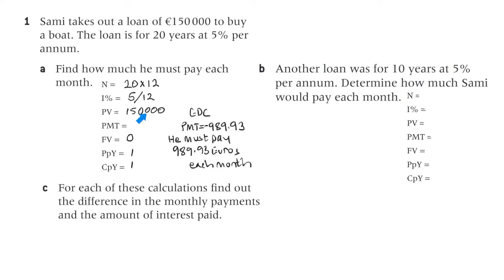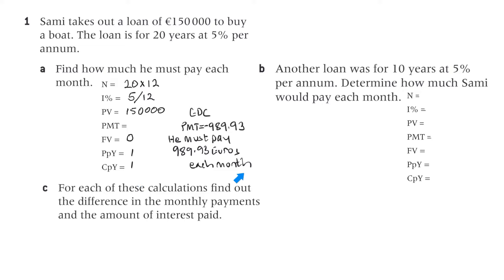For the monthly payment, we keep payments per year and compounding periods as one. N is 20 times 12 for the number of periods. The interest rate per month is 5% per year divided by 12. The present value is 150,000. Putting it in the calculator, we get 989.93 euros each month.